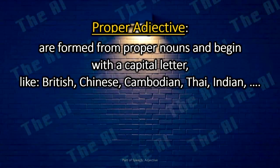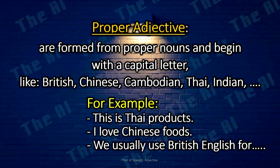Proper adjectives are formed from proper nouns and begin with a capital letter, like British, Chinese, Cambodian, Thai, Indian, etc. For example: This is a Thai product. I love Chinese food. We usually use British English for speaking in this country.